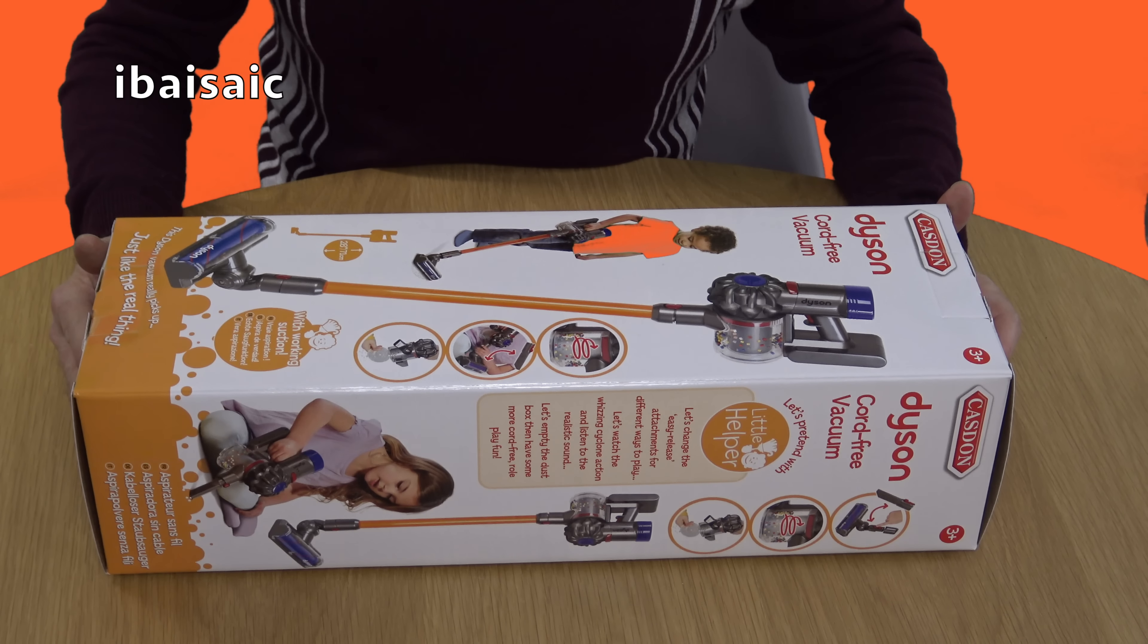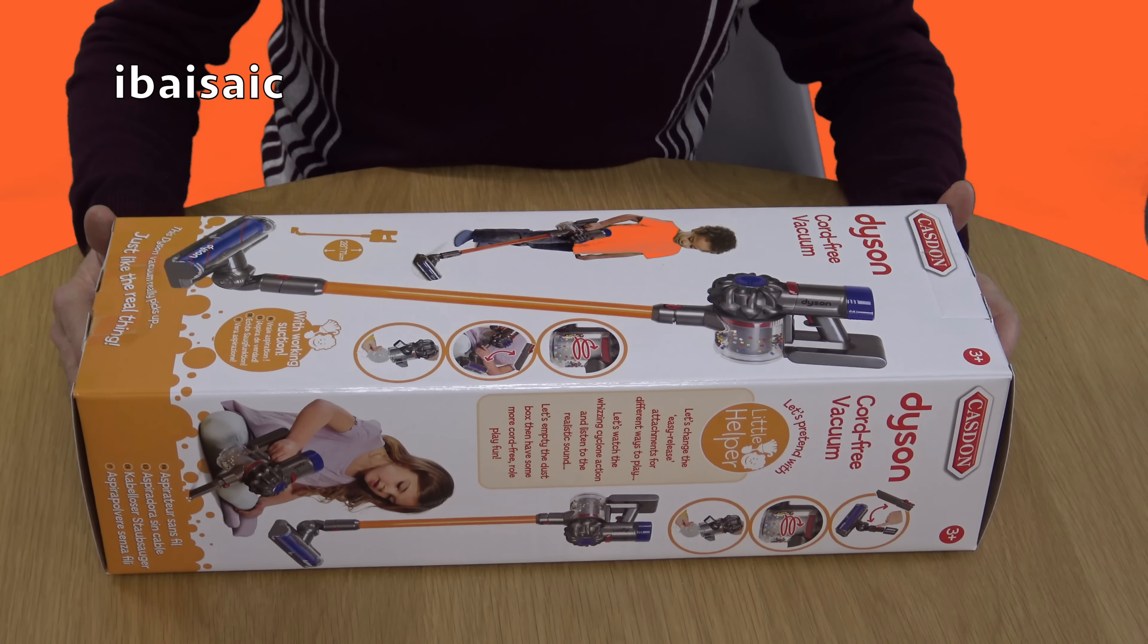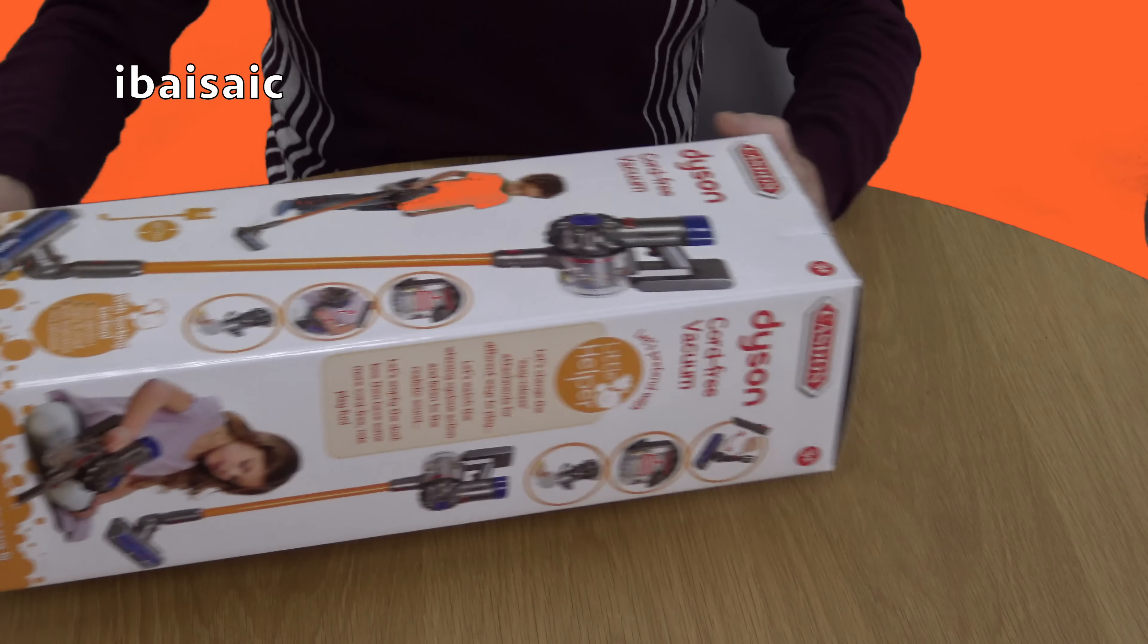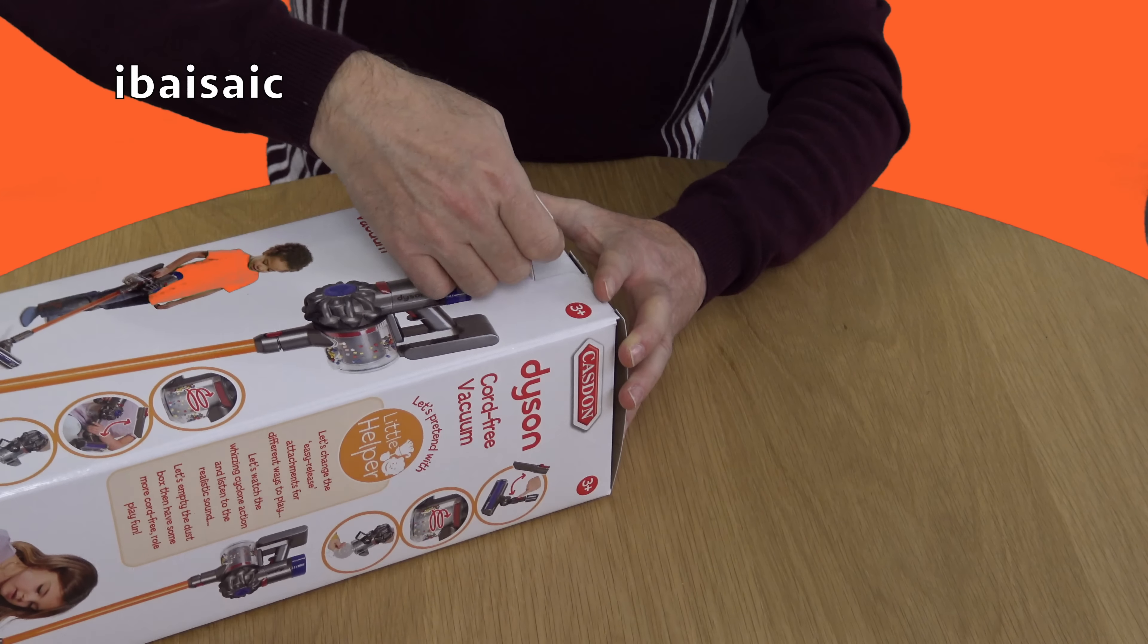This Dyson vacuum by Kasdan is suitable for children ages 3 and upwards and requires three AA batteries. Okay, let's get it open.